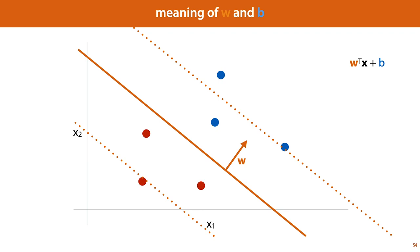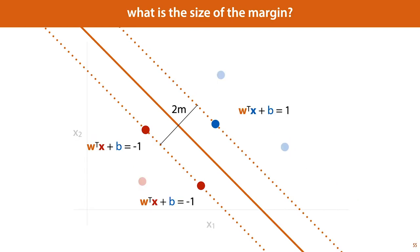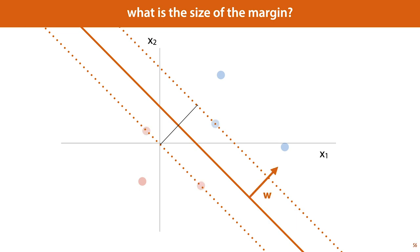Next, we need to express twice the size of the margin more precisely. In the equation w^T x + b, w is the vector pointing orthogonally to the decision boundary. We can move the axes so that the lower dotted line crosses the origin, which doesn't change the margin size. We then imagine a vector a from the origin to the upper dotted line at a right angle — the length of this vector is exactly the quantity we're interested in. Since w and a point in the same direction, orthogonal to the decision boundary, we can use that relationship.